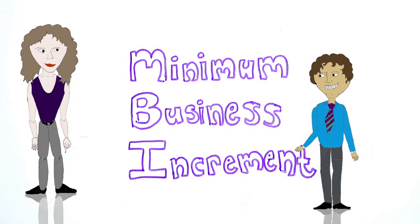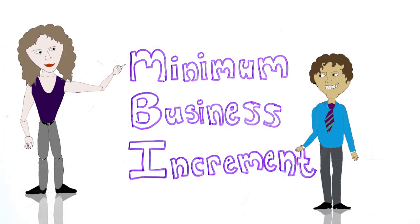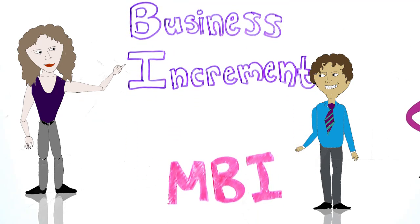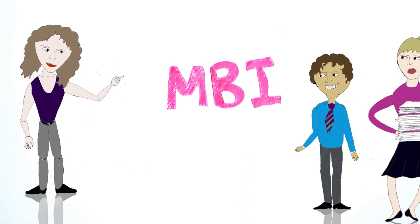I'm working with a project team that plans to use a concept called a minimum business increment in their agile backlog. The term MBI has been used liberally and inconsistently by team members.